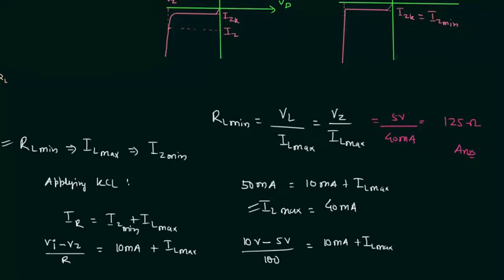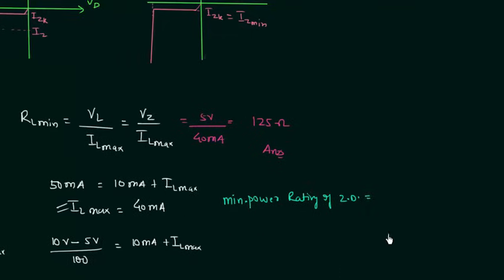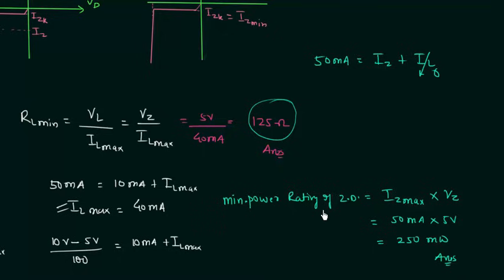Now we have to calculate the minimum power rating of the zener diode. The minimum power rating equals Vz multiplied by Iz maximum. Iz maximum equals 50 mA, because 50 mA equals Iz plus IL, and Iz is maximum when IL equals 0. So Iz maximum times Vz equals 50 mA multiplied by 5V, which equals 250 mW. The minimum value of load resistance is 125 ohms and the minimum power rating of the zener diode is 250 mW.